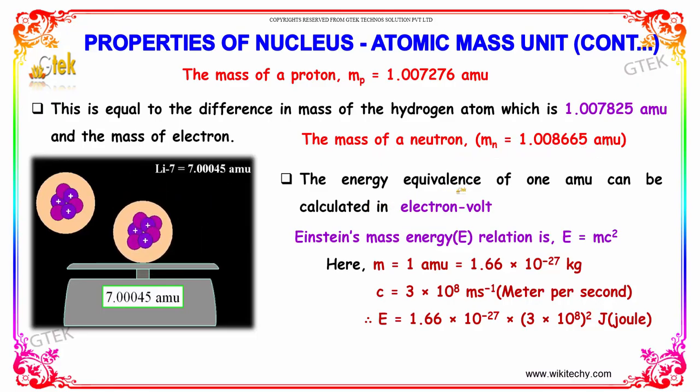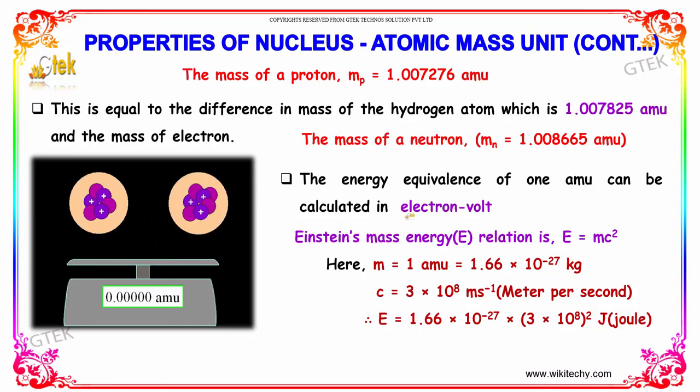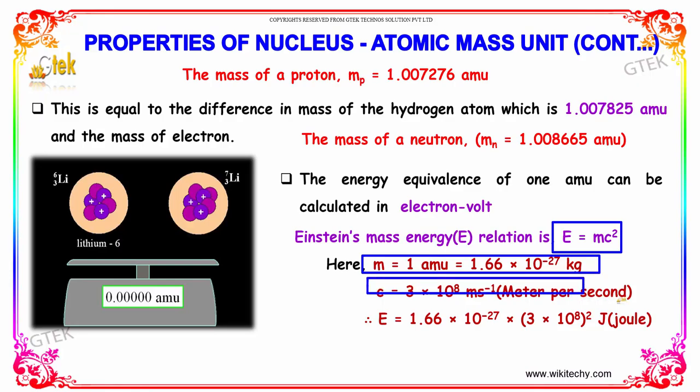The energy equivalence of 1 amu can be calculated in electron volt using Einstein's mass energy relation, which is E is equal to mc square. So m is equal to 1 amu, that's 1.66 into 10 power minus 27 kilogram. C is equal to 3 into 10 power 8 meter per second, and E is equal to 1.66 into 10 power minus 27 joule.